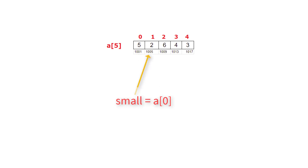We take a for loop and iterate through these array elements, comparing the value of `small` with all the other elements starting from `a[1]`. Whenever we encounter a value smaller than the value present inside variable `small`, we transfer that value onto variable `small`.